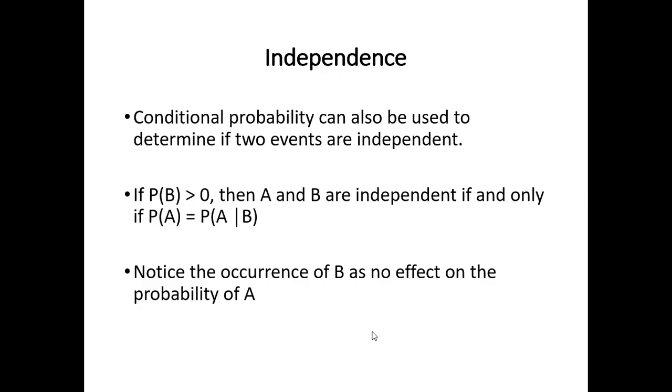Finally, we mentioned that conditional probability can also be used to determine if two events are independent. The main idea is, assuming the probability of B is positive, A and B are independent if and only if the probability of A is equal to the probability of A given B. Here we just note that the occurrence of B has no effect on the probability of A.